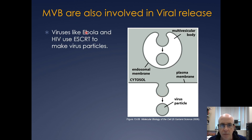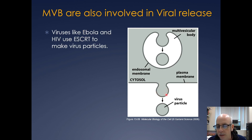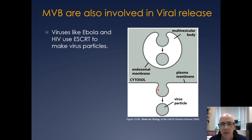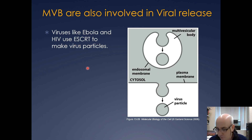Pretty much all viruses are going to do that as they pinch off and bud off the plasma membrane — Ebola, HIV, and it wouldn't surprise me at all if coronavirus does the same thing. So if you're a scientist at the CDC trying to prevent the spread of a viral infection, the ESCRT proteins might actually be something interesting to target.